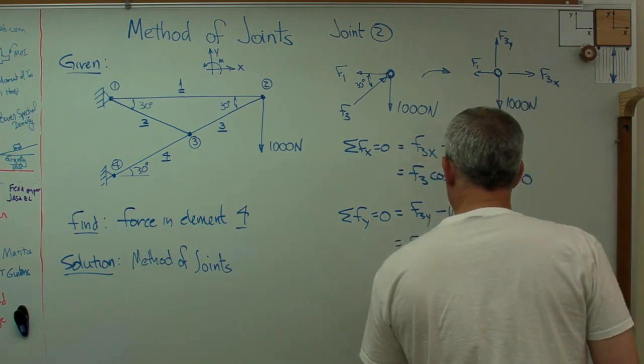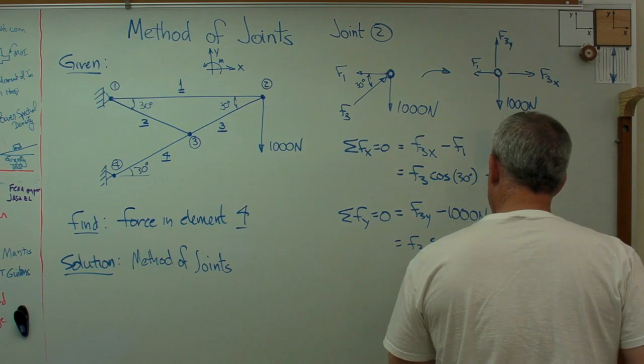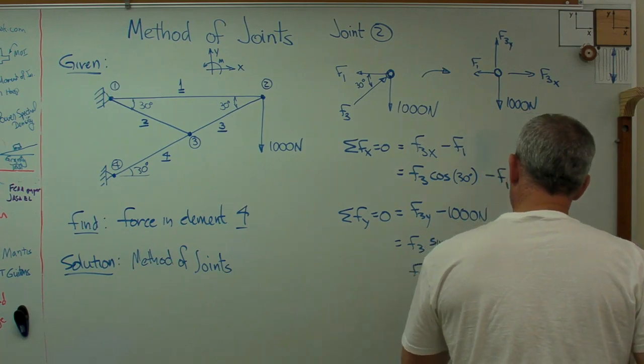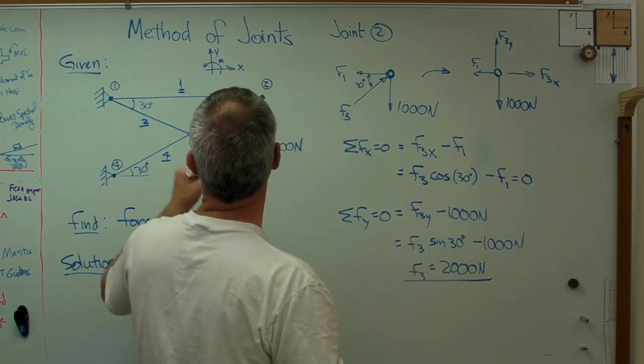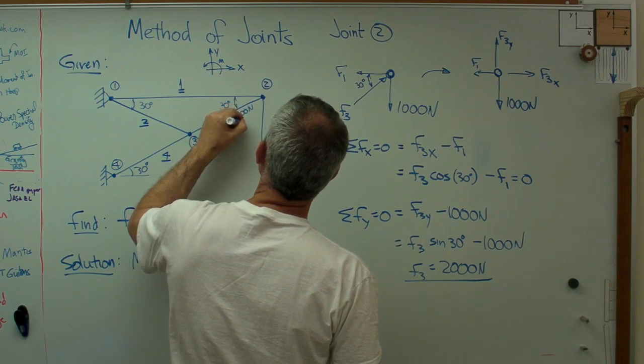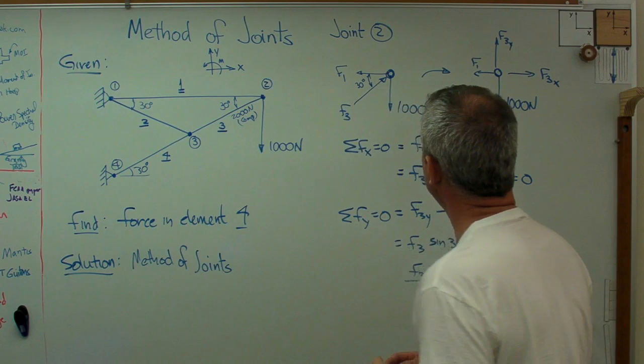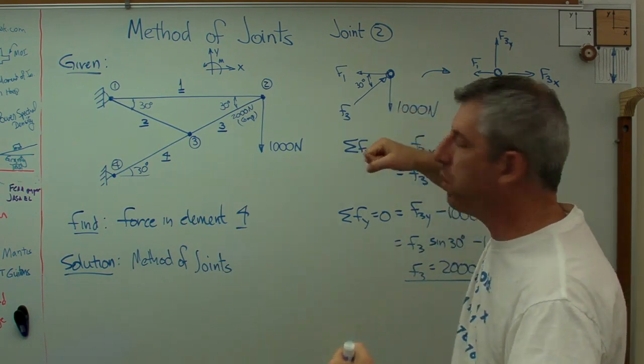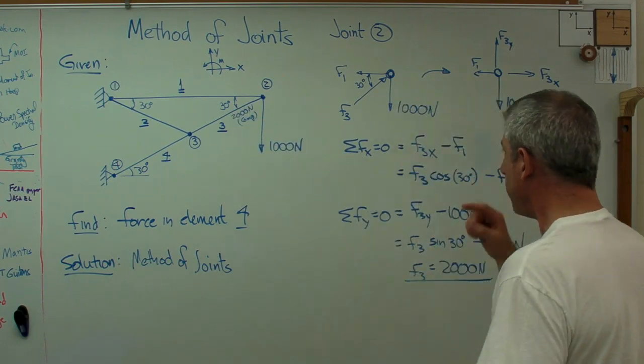I'm going to find out that F3 is 2,000 newtons. Intermediate answers, I'm going to put an underline there. So I now know that F3 is 2,000 newtons and that's in compression, because that's what I assumed here. If this part is in compression, it's pushing that way on that joint.